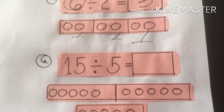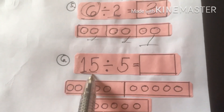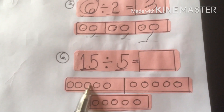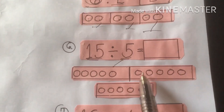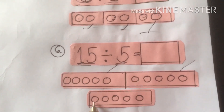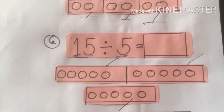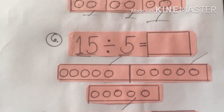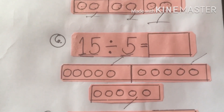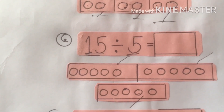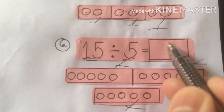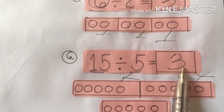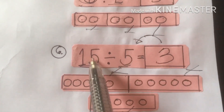Next: dividend is 15, divisor is 5. We draw 15 beads: 1, 2, 3, 4, 5, 6, 7, 8, 9, 10, 11, 12, 13, 14, 15. Then we group by 5: 1–2–3–4–5, 1–2–3–4–5, 1–2–3–4–5. This is a manual method, dear students, because our purpose is to inculcate this into your minds. This is the basic step in the division process. We have 3 groups: 1, 2, 3. Write the quotient — 3. So 15 divided by 5 equals 3.